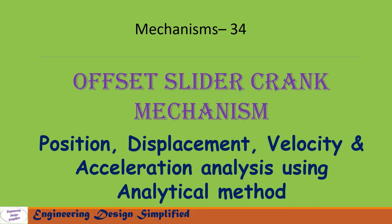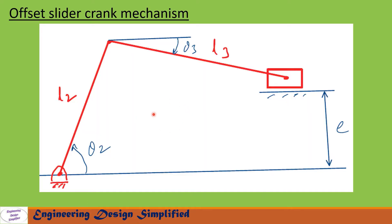Here is a typical offset slider crank mechanism. This link is the crank and its length is l2; the angle between the horizontal and the crank is theta2. This link is the coupler link and its length is l3; the angle between the horizontal and the coupler link is theta3. This is the slider, and the slider is at an offset of e from the horizontal from the center of the crank.